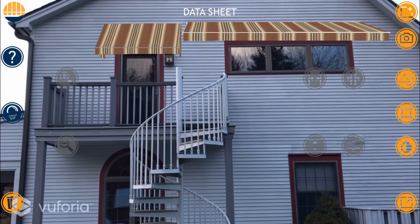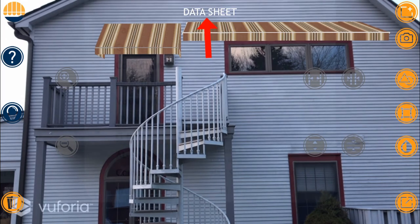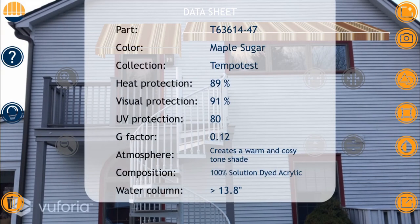I can now view all pertinent information regarding the selected pattern by simply tapping the datasheet icon at the top of the page. This information includes details like part numbers, color names, and our fabric pattern selection factors.